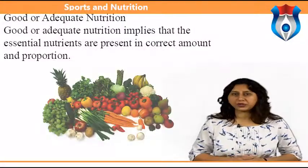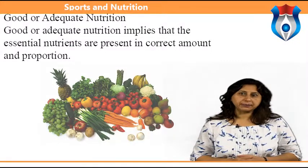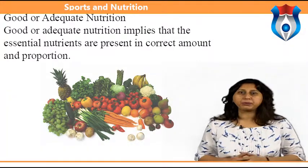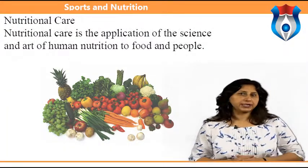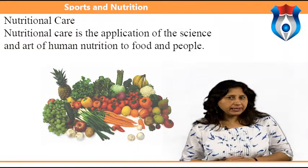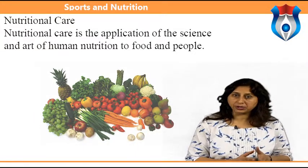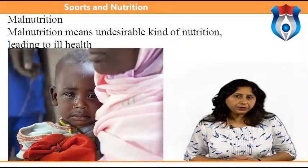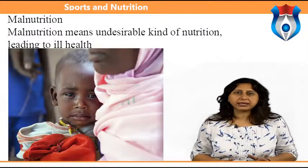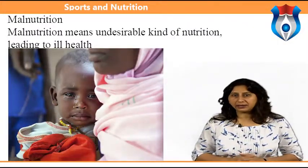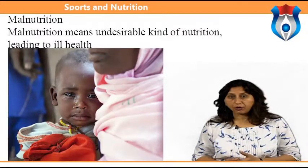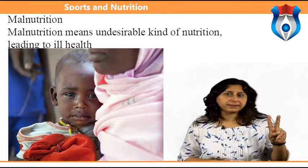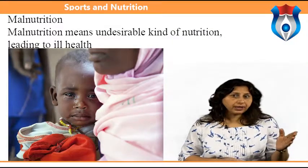Good or adequate nutrition implies that the essential nutrients are present in correct amounts and proportions. Nutritional care is the application of the science and art of human nutrition to food and people. Malnutrition means an undesirable kind of nutrition leading to ill health — it results from lack, excess or imbalance of nutrients in the diet and comprises two types: undernutrition and overnutrition.